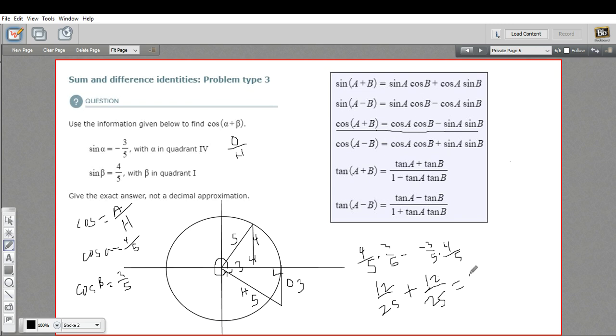So our answer there is going to be 24 twenty-fifths. So that is the cosine of alpha plus beta, 24 twenty-fifths. So that is another way to use the sum and difference identities.